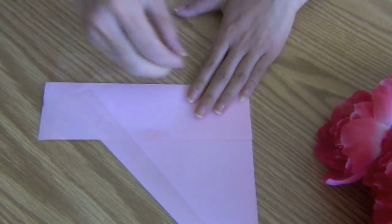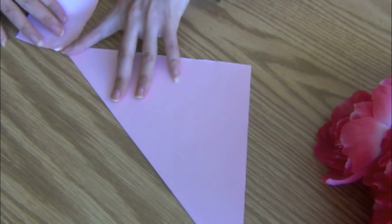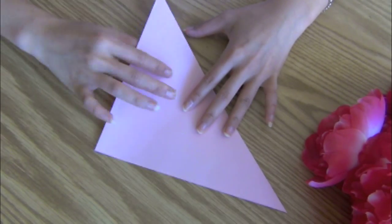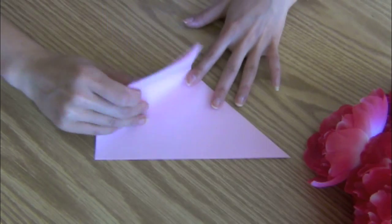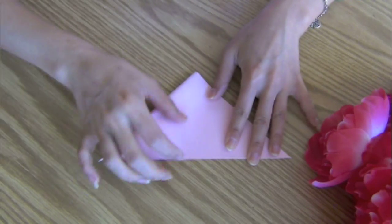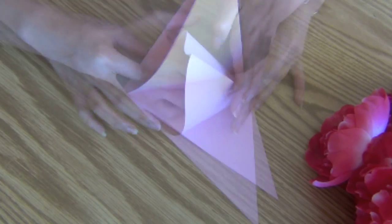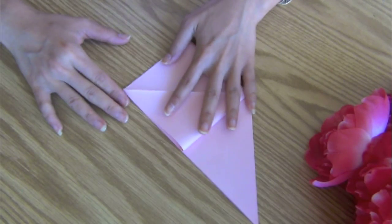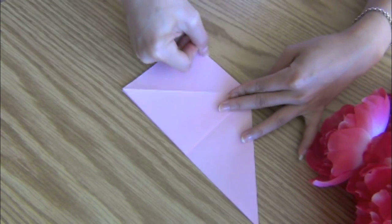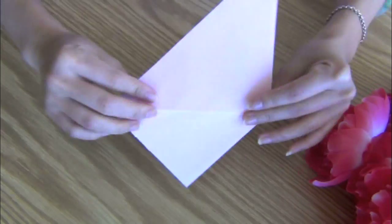If you guys ever made the origami lily, this is super similar to it. Actually, only one step is different and you will see it at the end. At this point you should be able to open one of the pouches and flatten it. Turn it over and do the same to the opposite side.